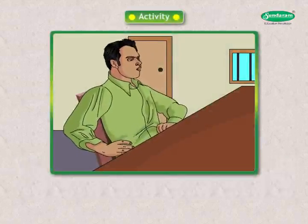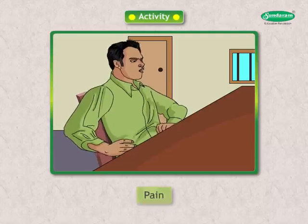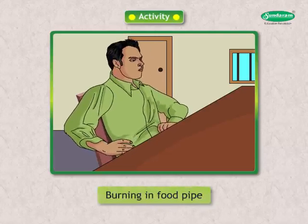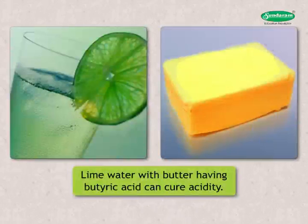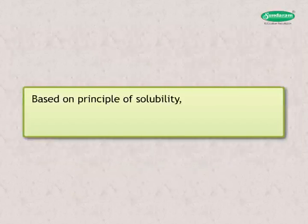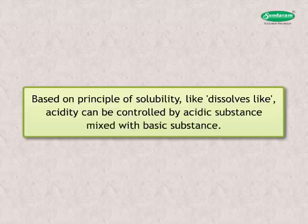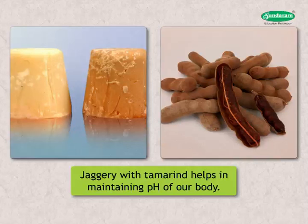Is there any member in your family who suffers from acidity? Symptoms include pain in the stomach and burning sensation in the food pipe. Baking soda in water is a cure. Milk of magnesia (magnesium hydroxide) is also a cure. Lime water with butter having butyric acid can also cure acidity. Based on the principle of solubility — 'like dissolves like' — acidity can be controlled by mixing an acidic substance with a basic substance. Similarly, jaggery is used with tamarind while cooking. This helps in maintaining the pH of our body.